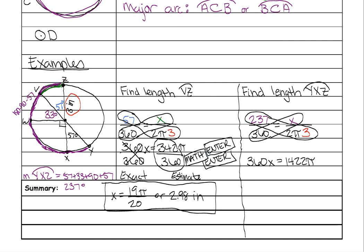So after you're done cross-multiplying, 237 times 2 times 3 is 1422, divide both sides by 360 to get it away from your x.